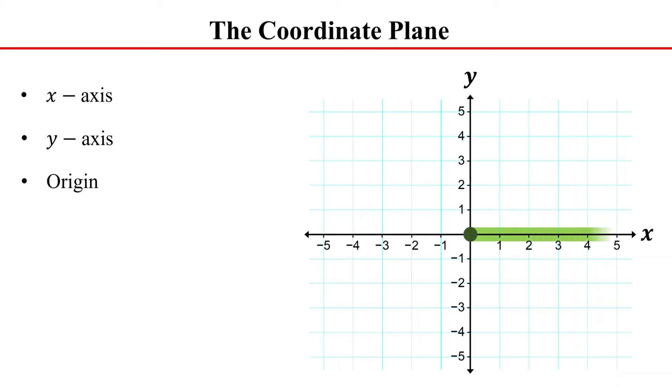On the x-axis, the region to the right of the origin is positive and to the left of the origin is negative. On the y-axis, the region above the origin is positive and below the origin is negative.